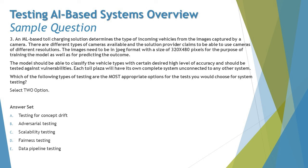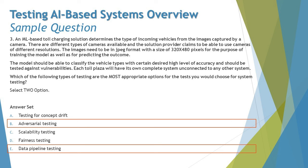Option E — data pipeline testing — is certainly required. Images can come in various formats and resolutions, so they must be filtered and standardized. The scenario clearly specifies that all images should be in JPEG format with a resolution of 320 by 480 pixels. Therefore, data pipeline testing is critical. The two correct answers are B (adversarial testing) and E (data pipeline testing), completely driven by the scenario.